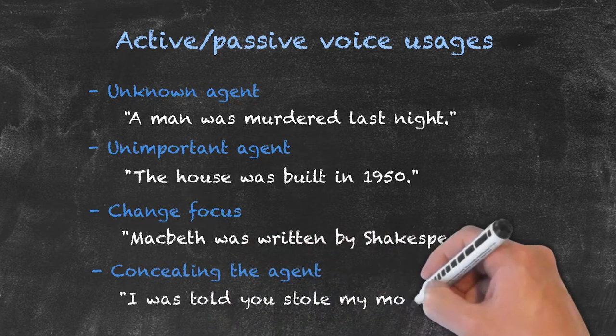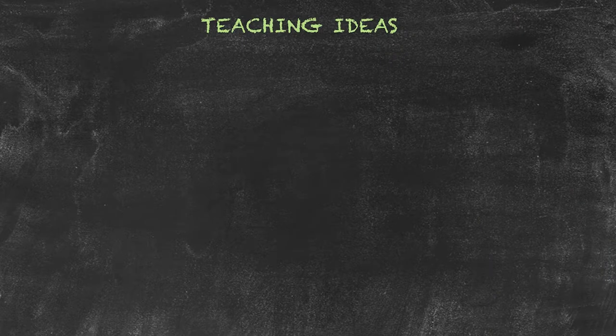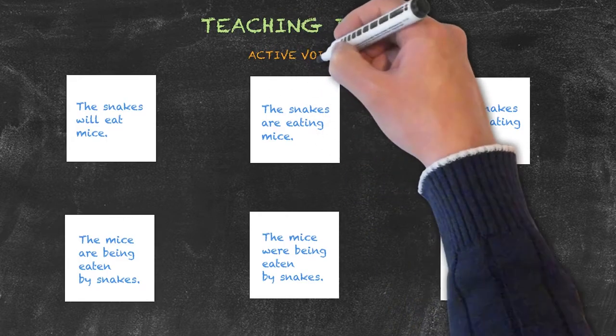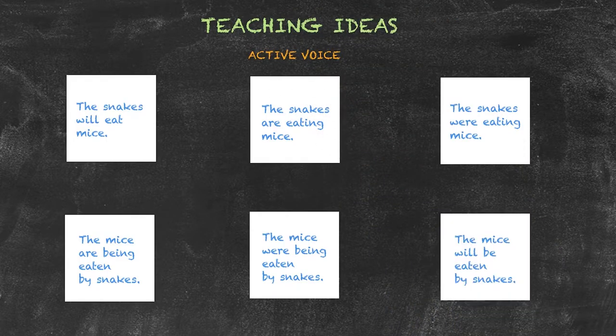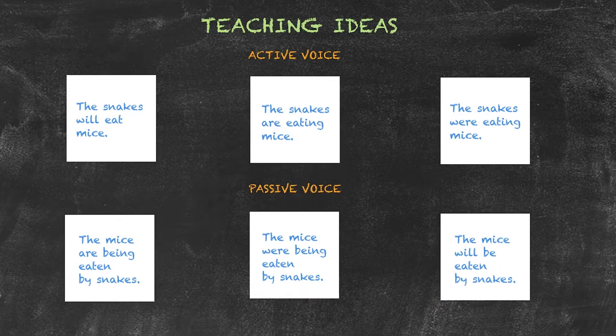A teaching idea for the passive voice could be a Pelmanism or matching game. Here we have different sentences, half of which are written in the active voice and the other half in the passive voice. The idea is for students to turn one of each over and identify whether or not they match each other.